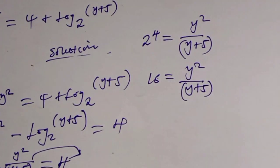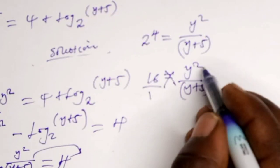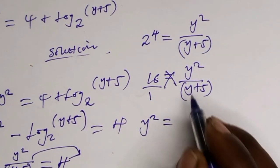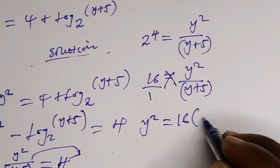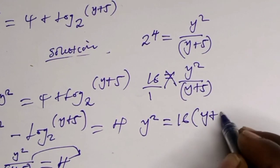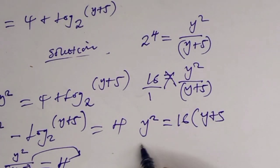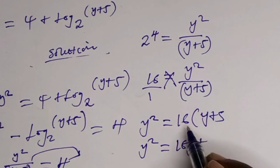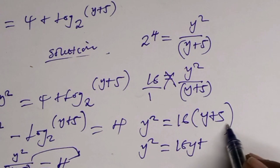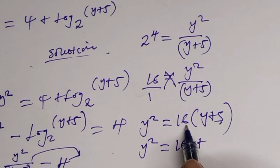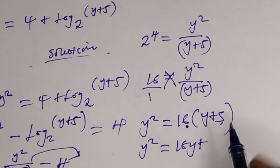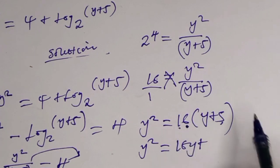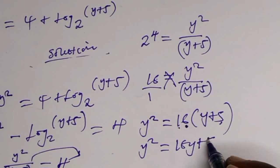Let's try to expand now. We are going to have y squared equals 16 times y plus 16 times 5. 16 times 5 is 80.